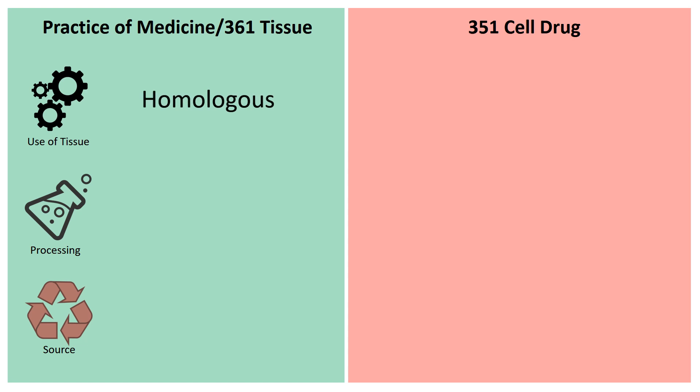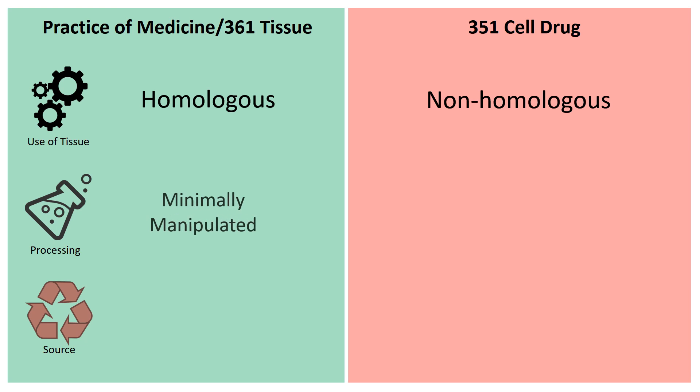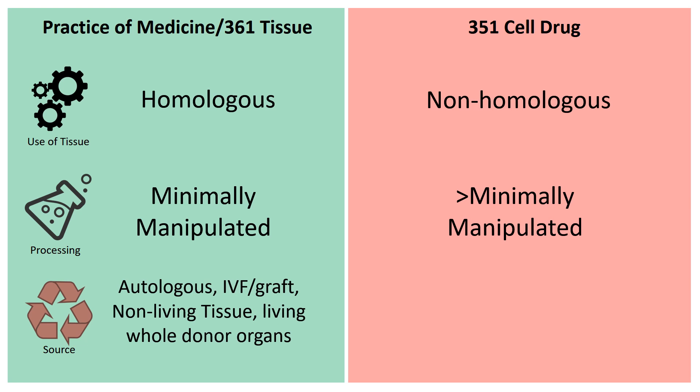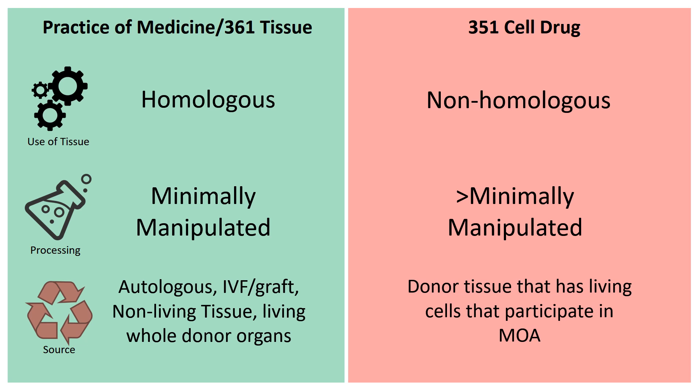As far as use of tissue, it's broken into homologous and non-homologous. Homologous is defined very narrowly as the exact same use in the body as clinical. Non-homologous is obviously not doing that. Processing is either minimally manipulated or more than minimally manipulated. And source: if it's autologous, used in IVF, an autologous graft, or a living whole donor, that's going to be on the 361 tissue side or practice of medicine. If it's a donor tissue that has living cells that participate in the mechanism of action, that's going to be on the cell drug side.